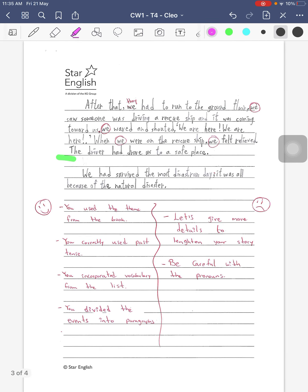The good things that you had in your story were that you used the theme from the book, you used past tense correctly, which is really good. Also, you were able to finish your first draft, so you were able to manage and change some of the mistakes before. You incorporated vocabulary from the book, which is really good, and you divided the events into paragraphs.